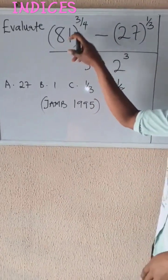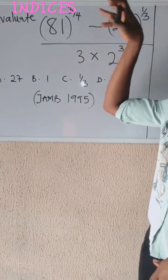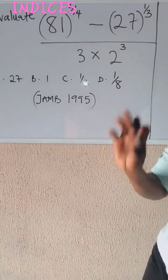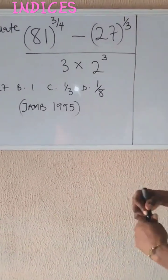This is 81 raised to the power of 3 over 4. Anytime you have a question that has a power, it's from a topic we call indices. So it's very simple.